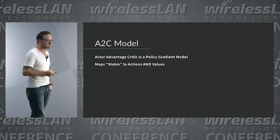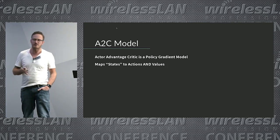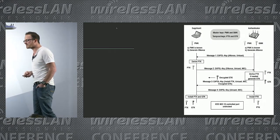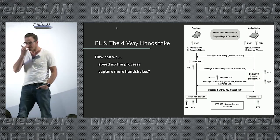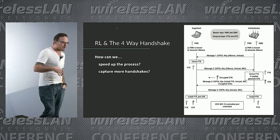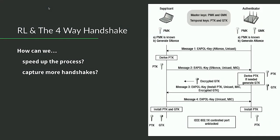Trying to cover reinforcement learning in 10 minutes doesn't really work all that well, so I'll send a couple of links at the end with some really cool explanations, including a cartoon format that even children can follow. Let's apply this to the four-way handshake. How many of you have tried to capture the four-way handshake? Hopefully everyone who's gone through the CWSP process has looked at it at least once. One of the issues we run into is that we need to trigger this event.